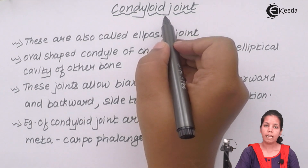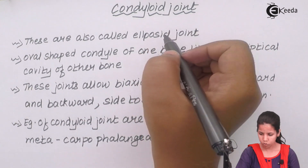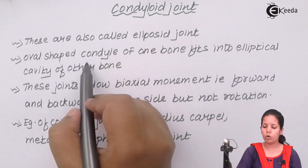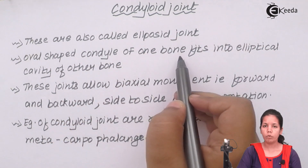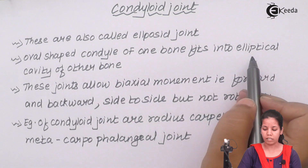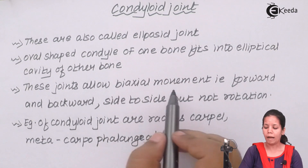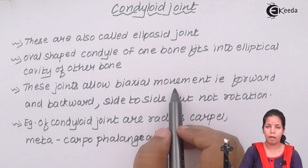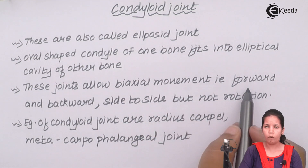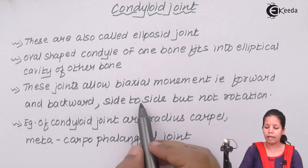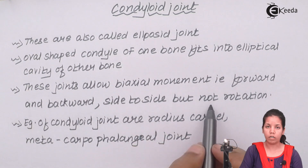Condyloid joints can also be called ellipsoid joints. Being oval shaped, the condyle of one bone always fits into the elliptical cavity of another bone. These joints basically allow biaxial movement — that means to and fro, or backward and forward, or side to side. But they never allow rotation; rotation is always restricted in this kind of joint.